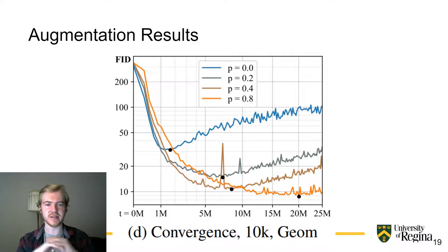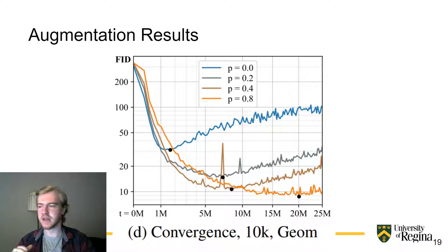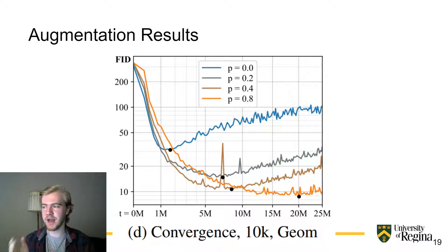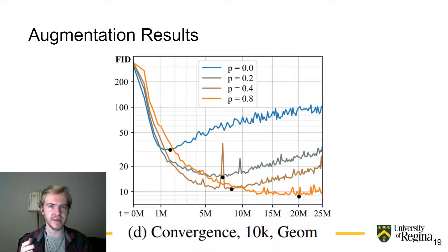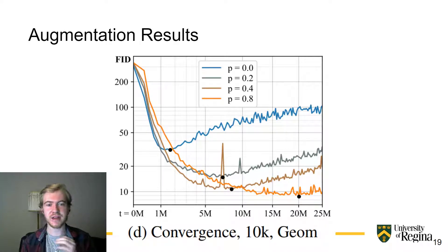P equals 0.0 means no augmentation is being applied to the images — you can see it still peaks very early and still has the same overfitting qualities. As P goes up to 0.2, we see an even lower peak. At P equals 0.4, we see yet another later and lower peak. And at the most augmentation of 0.8, we see a ton less overfitting and greatly improved performance.